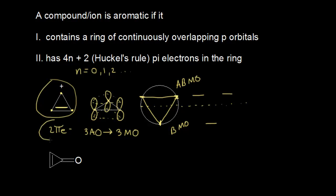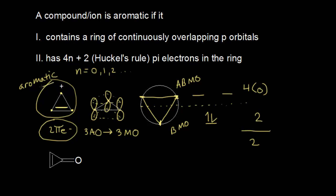I have 2 pi electrons to worry about, so completely analogous to electron configurations, I fill the lowest energy orbital first — that would be my bonding molecular orbital. Those 2 pi electrons completely fill my bonding molecular orbital. Analyzing this with Hückel's rule: 2 pi electrons corresponds to 4 times 0 plus 2, which equals 2 — that satisfies Hückel's rule. This ion satisfies the second criteria as well, so the cyclopropenyl cation is aromatic, and it is extra stable.